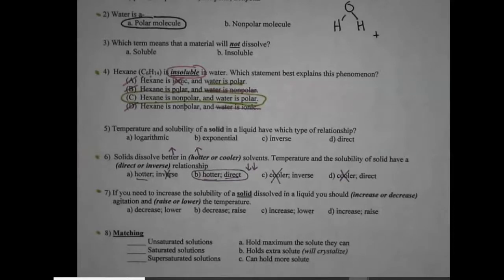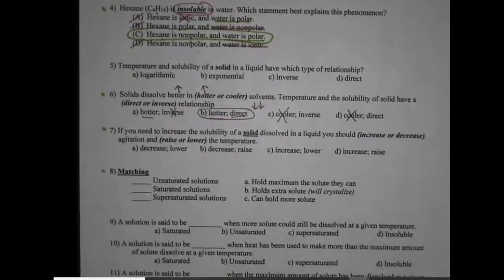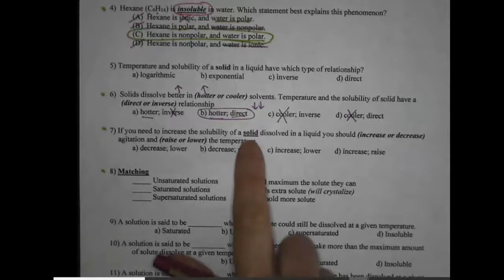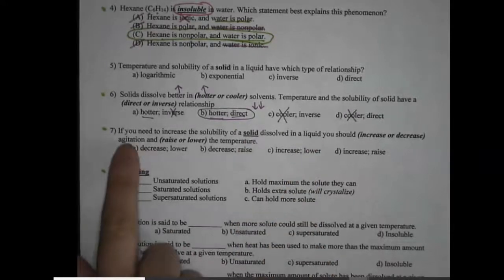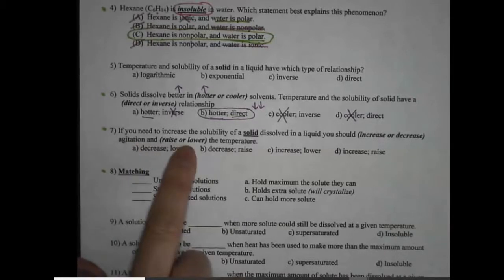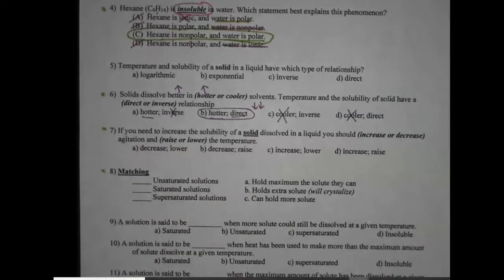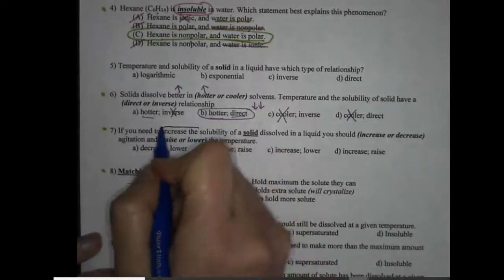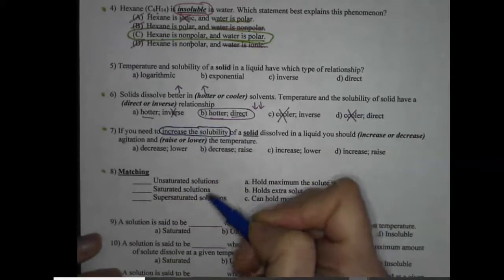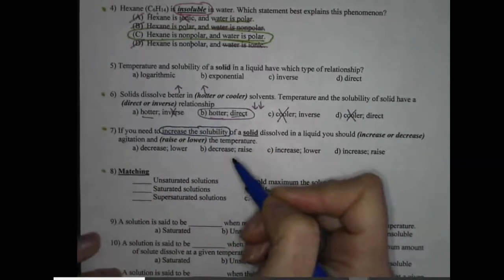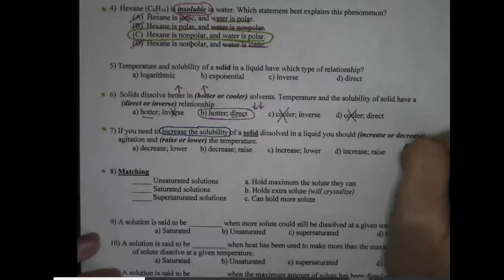Number seven, we had one just like this in the notes. It says if you need to increase the solubility of a solid dissolved in a liquid, so we're thinking sugar dissolved in water, what should we do to agitation and what should we do to temperature? Remember when it says increase the solubility, that means we want it to dissolve better or dissolve faster, dissolve more. So we want it to dissolve better.